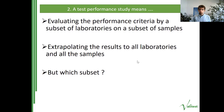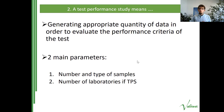This immediately raises the key question: which subset will I use? What you need for a TPS is to generate an appropriate amount of data to evaluate the performance characteristics of the test. Generating enough data relies on two key elements: the number and type of samples included in your sample panel, and the number of laboratories participating in the TPS.